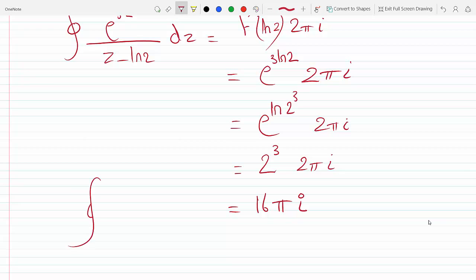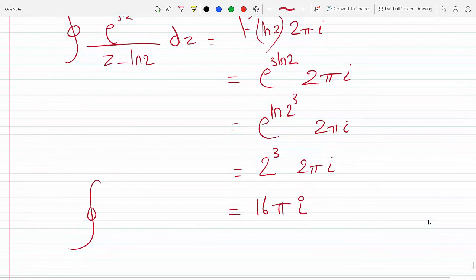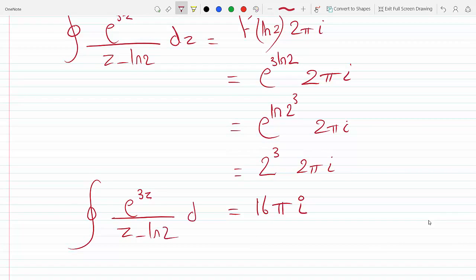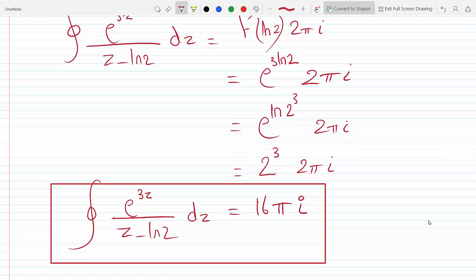This answers what the integral for e^(3z)/(z-ln2) dz is using Cauchy integral formula. 2³ is 8 times 2 is 16, there's another 2 here.